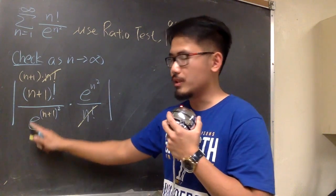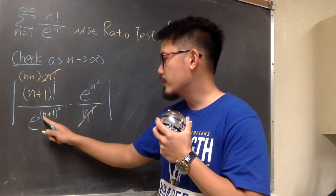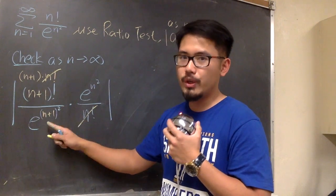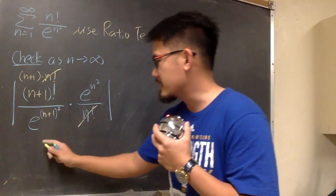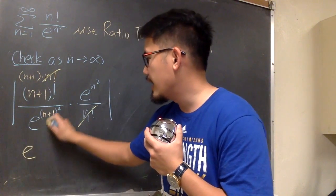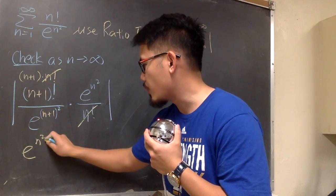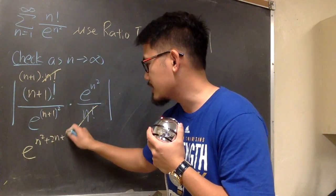And now, let's see how can we simplify this. Well, this is (n+1) squared, we can work this out. So, this is the same as e, and then (n+1) squared is the same as n² + 2n + 1.